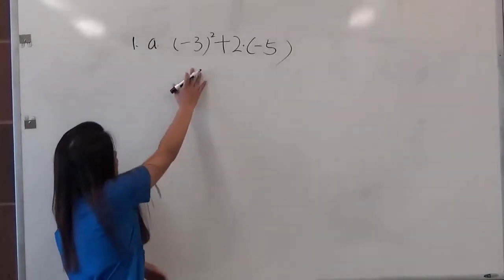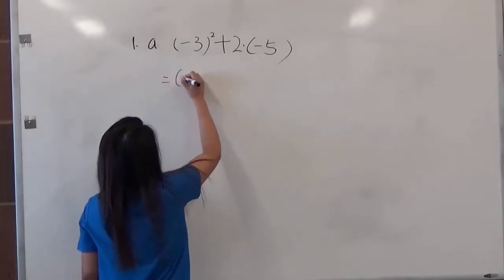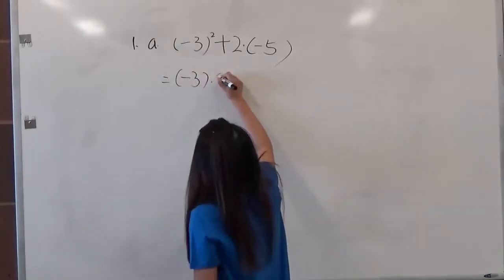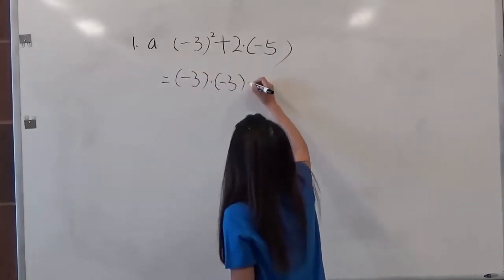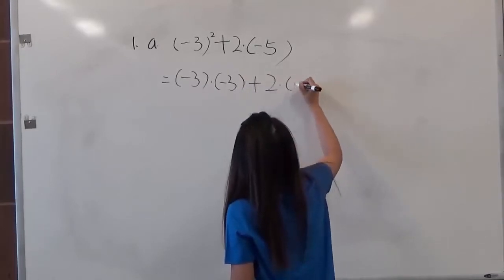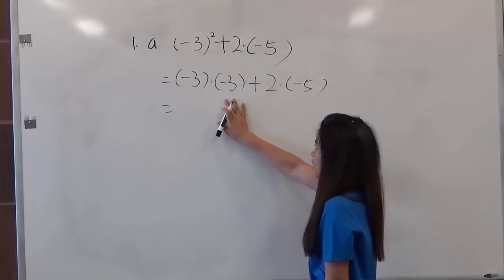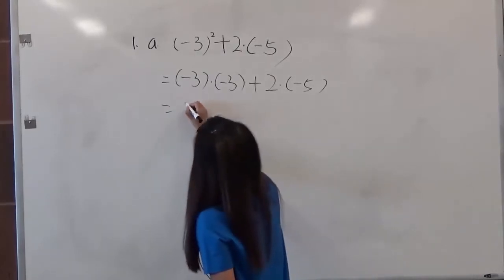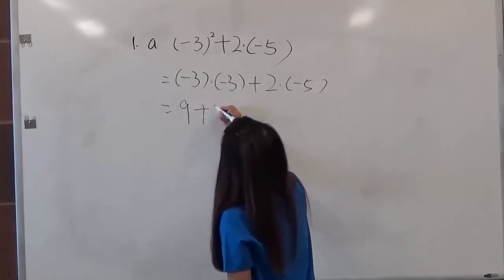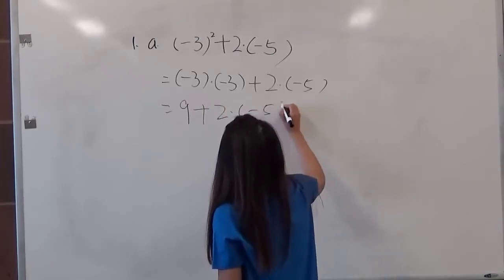So negative 3 squared is the same as negative 3 times negative 3, then plus 2 times negative 5. So negative 3 times negative 3 is 9, then plus 2 times negative 5.